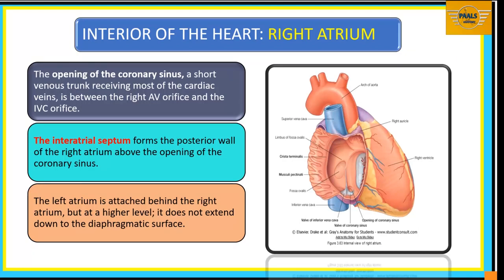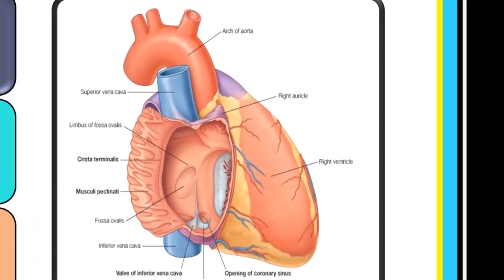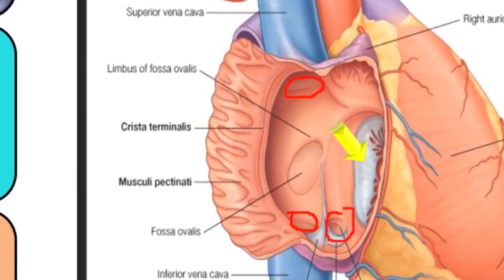When we look at the interior of the heart again, we see a number of openings: the opening of the coronary sinus, the opening of the inferior vena cava, and the opening of the superior vena cava. The opening of the coronary sinus is a short venous trunk receiving most of the cardiac veins, located between the right atrioventricular orifice and the inferior vena cava orifice. The large atrioventricular orifice connects the right atrium to the right ventricle.